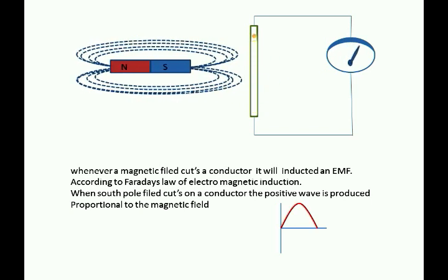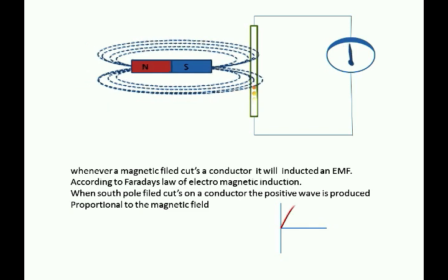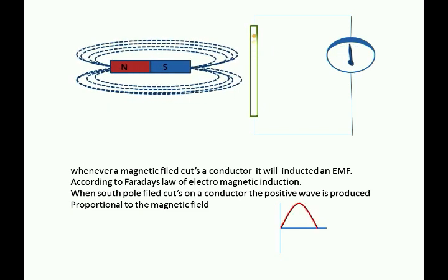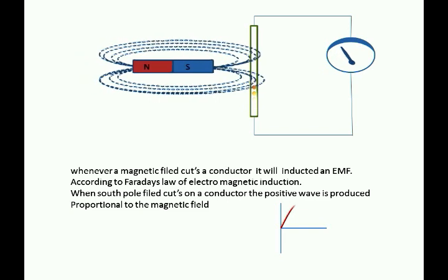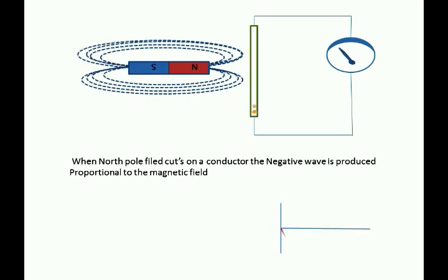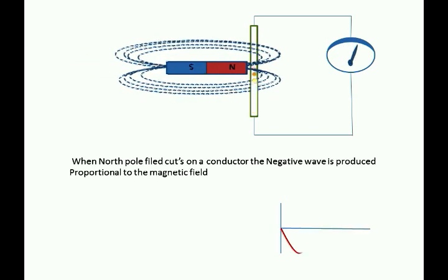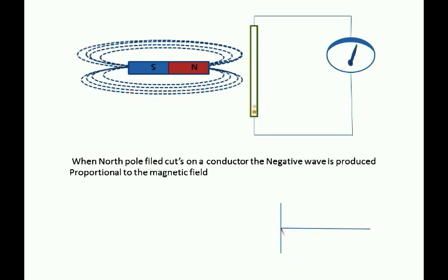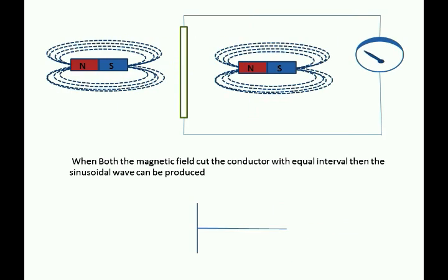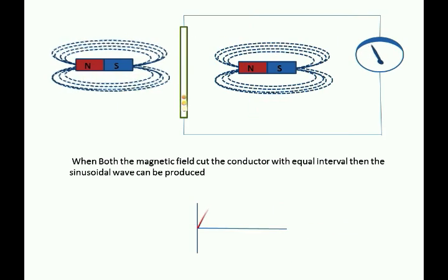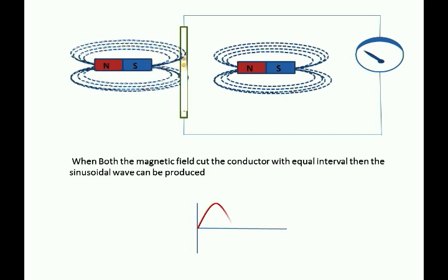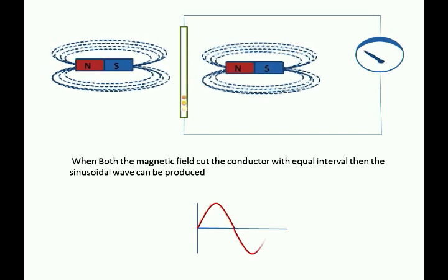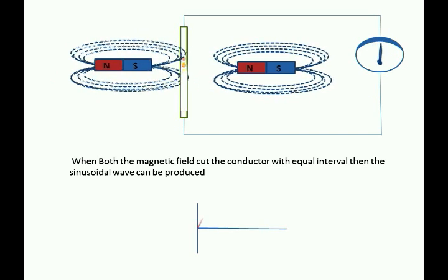Step 1: When a south pole field cuts a conductor, the positive wave is produced proportional to the magnetic field. Similarly, Step 2: when a north pole field cuts a conductor, the negative wave is produced proportional to the magnetic field. When we combine these two steps, when both magnetic fields cut the conductor with equal interval, then the sinusoidal wave can be produced.